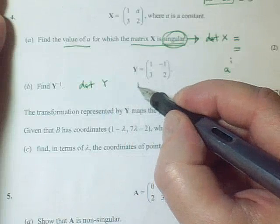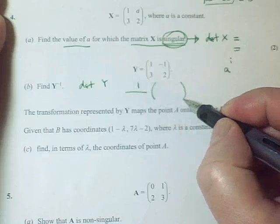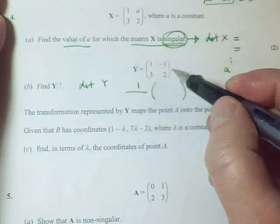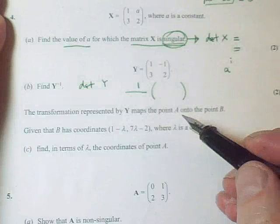But then you have to do one over that determinant, and then you have to multiply by the matrix formed by rearranging these in the way described in your notes.